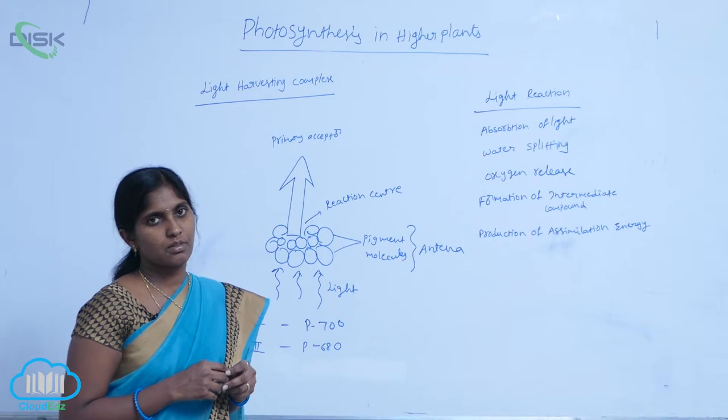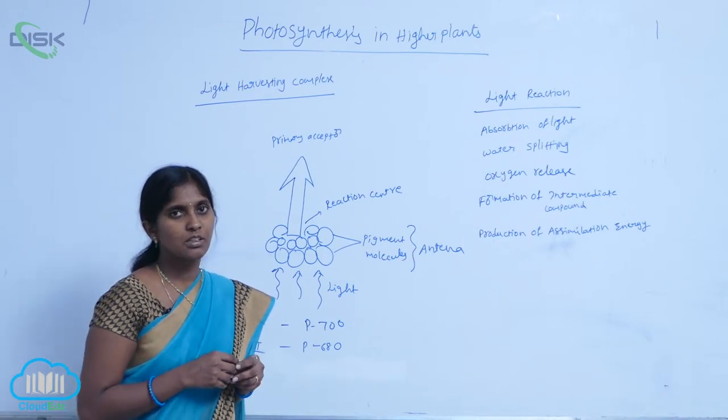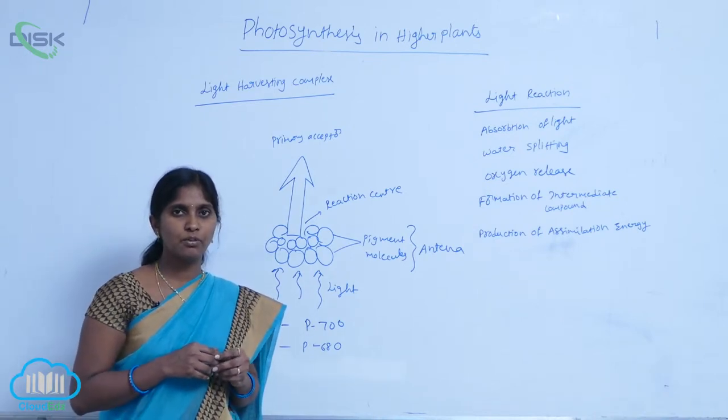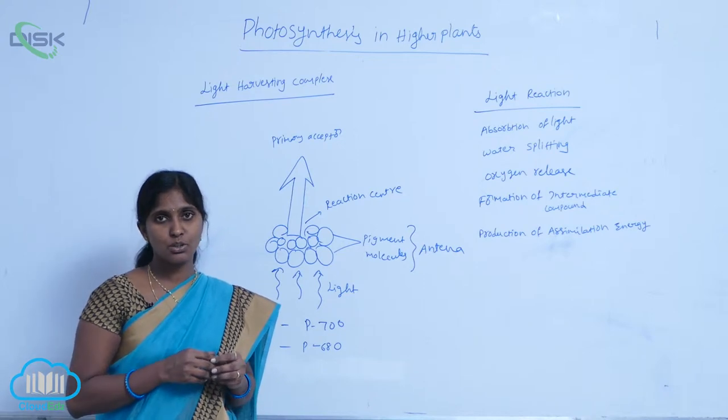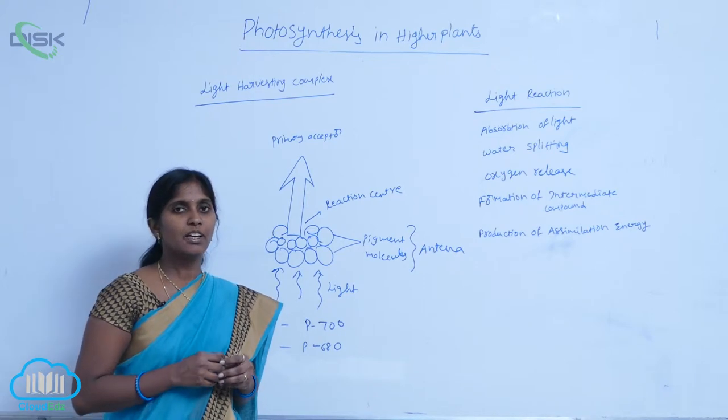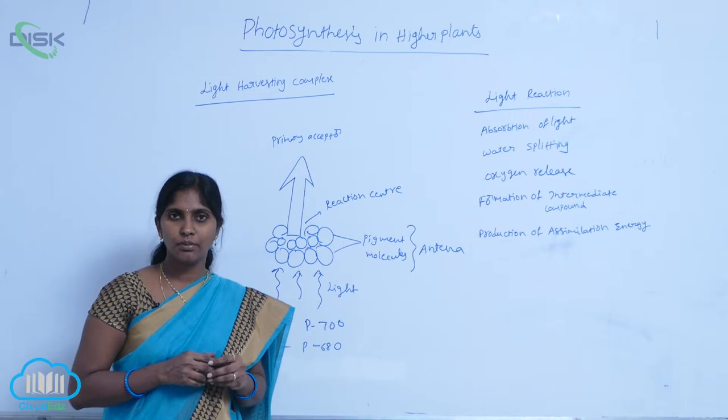Absorption of light. The visible light is available for photosynthesis. It is very suitable for photosynthesis. Red and blue lights are effective lights for photosynthesis.